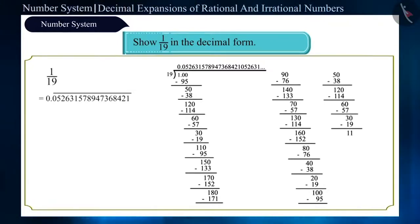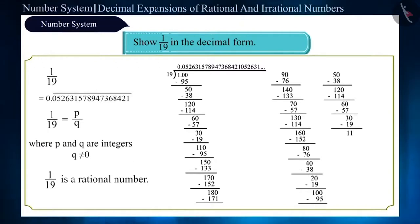We can write this number as 1 by 19, that is P by Q. So, it is a rational number. In this, we will definitely get repetition of some number or group of numbers.